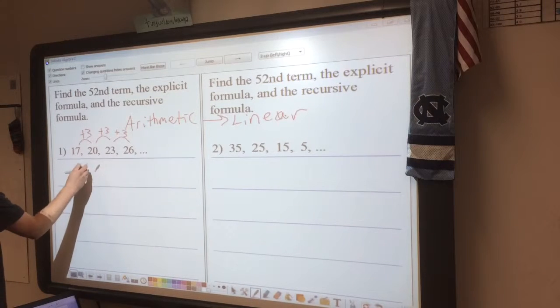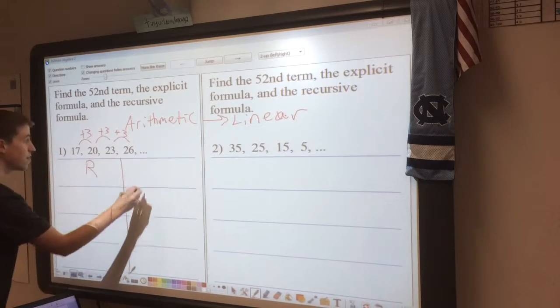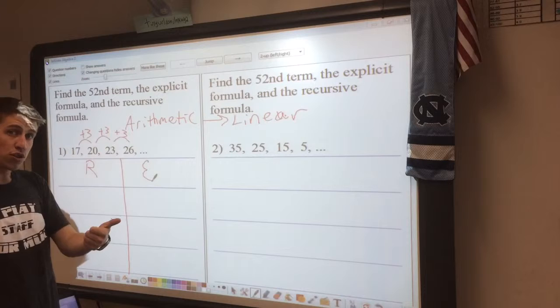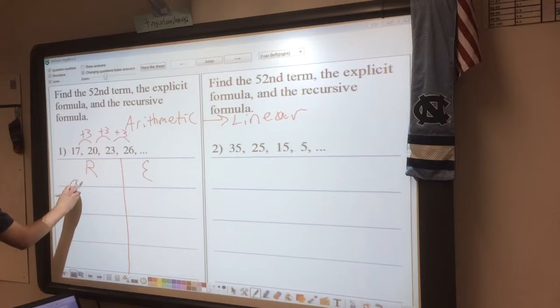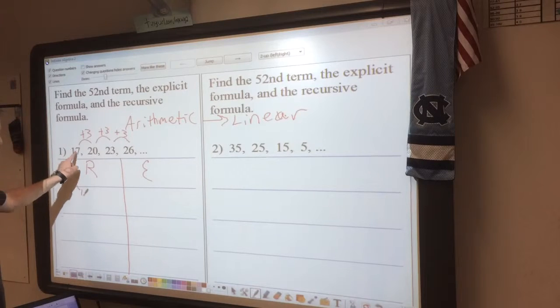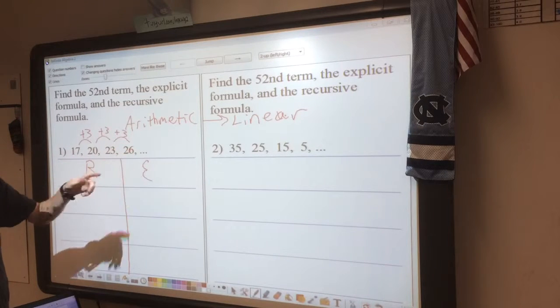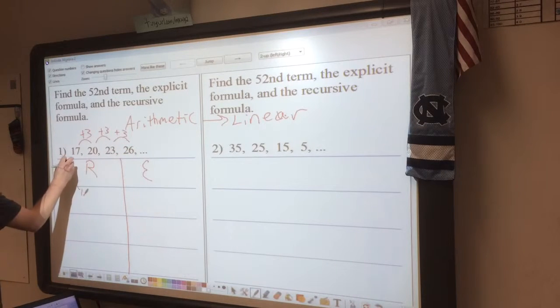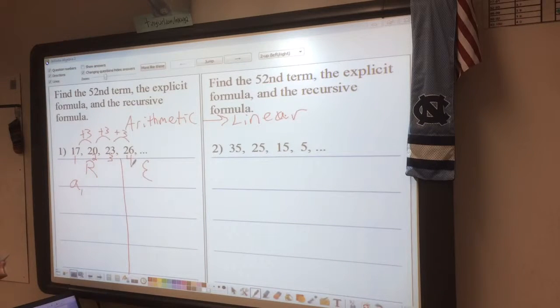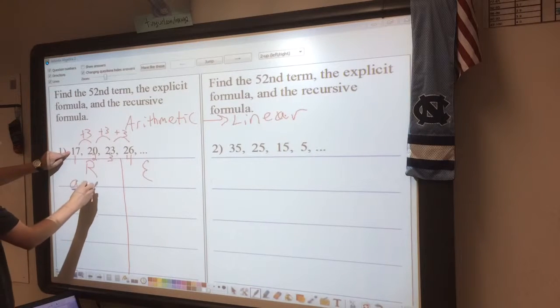Now we need to know how to write both our recursive and our explicit formula. The recursive formula always needs an initial condition, which we're going to call A1. The little number down here is counting which number in the sequence or which term in the sequence. I see right here I have a first term, a second term, a third term, and a fourth term. I always want the first one, A1, which I see here is equal to 17.